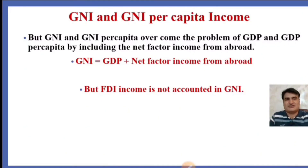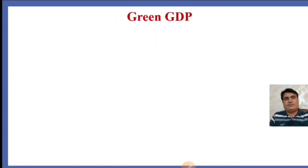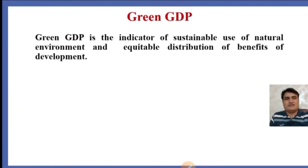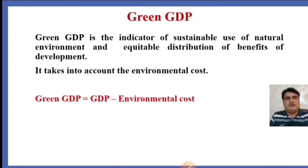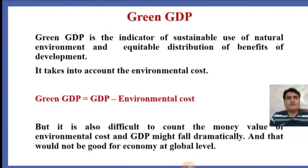Another method is green GDP. Green GDP is the indicator of sustainable use of the natural environment and equitable distribution of the benefits of development. Green GDP takes into account the environmental cost. Green GDP is equal to GDP minus environmental cost. However, it is difficult to count the money value of environmental costs, and GDP might fall dramatically, which would not be good for the economy at a global level.